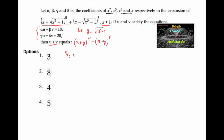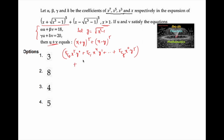We expand (x + y)⁵ using the binomial theorem: ⁵C₀x⁵y⁰ + ⁵C₁x⁴y¹ + ⁵C₂x³y² + ... + ⁵C₅x⁰y⁵. Similarly, (x - y)⁵ gives ⁵C₀x⁵y⁰ - ⁵C₁x⁴y¹ + ... - ⁵C₅x⁰y⁵. By adding these two expansions, the odd-powered y terms cancel out.